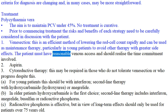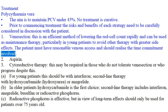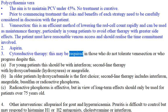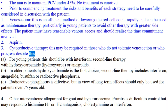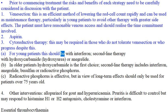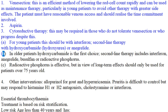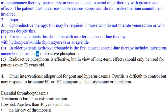The patient must have reasonable venous access and should realize the time commitment involved. 2. Aspirin. 3. Cytoreductive therapy: This may be required in those who do not tolerate venesection or who progress despite this. A. For young patients this should be with interferon; second-line therapy with hydroxycarbamide (hydroxyurea) or anagrelide. B. In older patients hydroxycarbamide is the first choice; second-line therapy includes interferon, anagrelide, or busulfan.